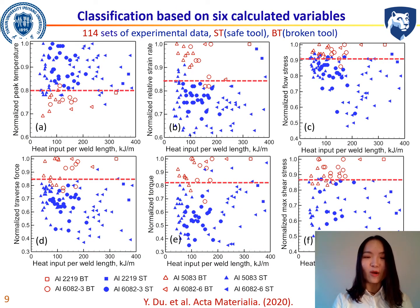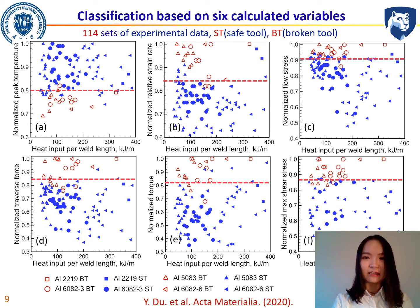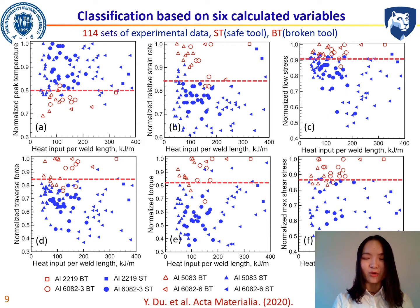Here we collected 114 sets of experimental data for both safe tool and broken tool cases. For the six computed variables mentioned above, we calculated and plotted them as shown. It is clear that there is a threshold value that can be used to separate all the data into two cases: safe tool and broken tool.